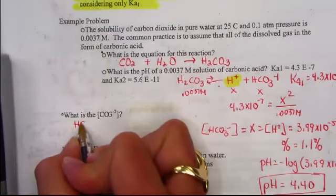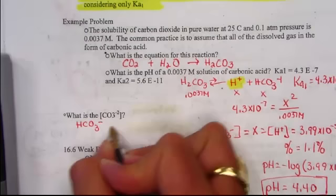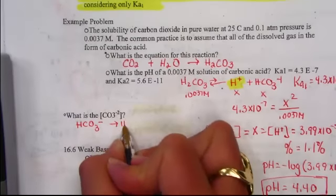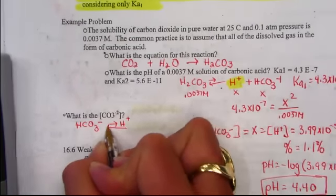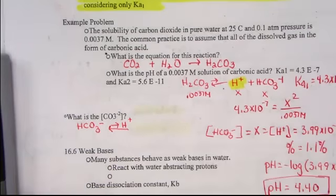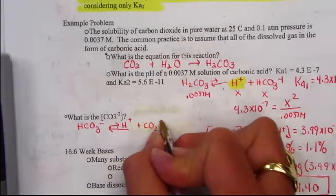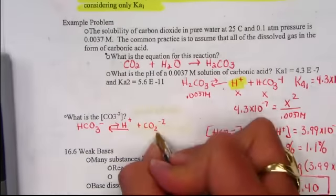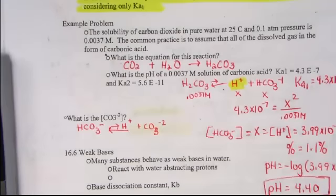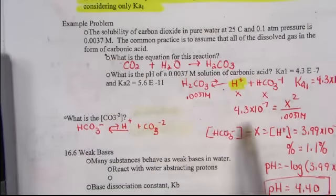In other words, the second removal from bicarbonate, it will let go of its hydrogen ion giving us a carbonate ion CO3 minus 2. The original value of bicarbonate came from our previous answer. It's starting at 3.99 times 10 to the negative 5th.